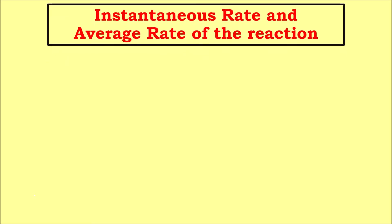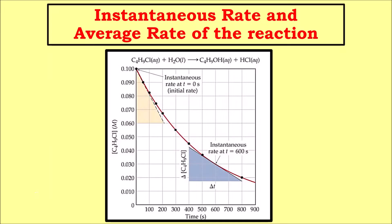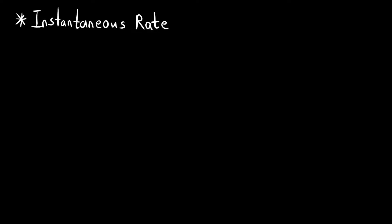Hello everyone, welcome to Chemazon Complete Chemistry. In today's video, we are going to learn how to find out the instantaneous rate and the average rate of reactions from the graph. If the graph of concentration of the reactant or product versus time is given, then how can we calculate the instantaneous rate and the average rate.